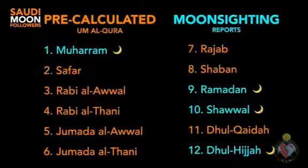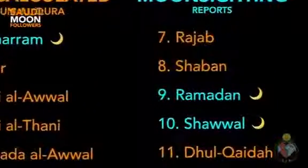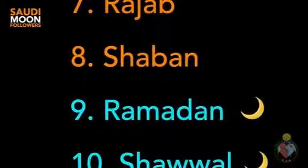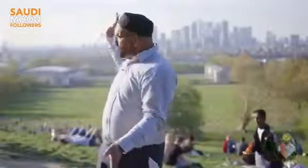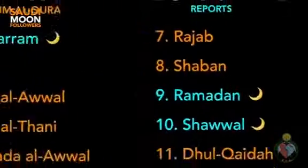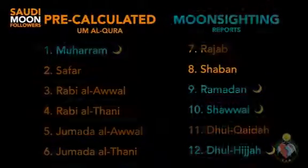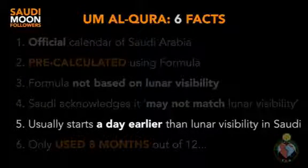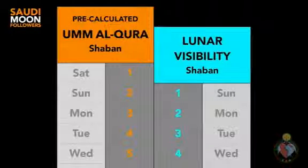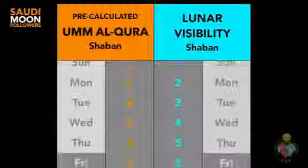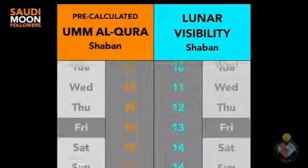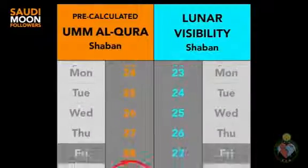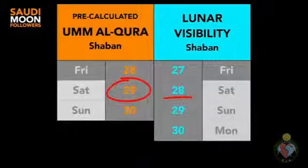So how does this impact when Ramadan begins? The implications of this mixed calendar system on Ramadan are massive. The month before Ramadan is called Sha'aban, and the 29th of Sha'aban is a very special day. Sha'aban this year, as it does every year, began according to the Umm al-Qurah calculation. But remember, the pre-calculated months often begin a day before the moon is actually visible, and this was the case for Sha'aban this year. So every date of Sha'aban in Saudi Arabia this year was a day earlier than Sha'aban based on lunar visibility. By the time we come to the 29th of Sha'aban according to the Umm al-Qurah calendar, it will actually be the 28th of Sha'aban according to lunar visibility.